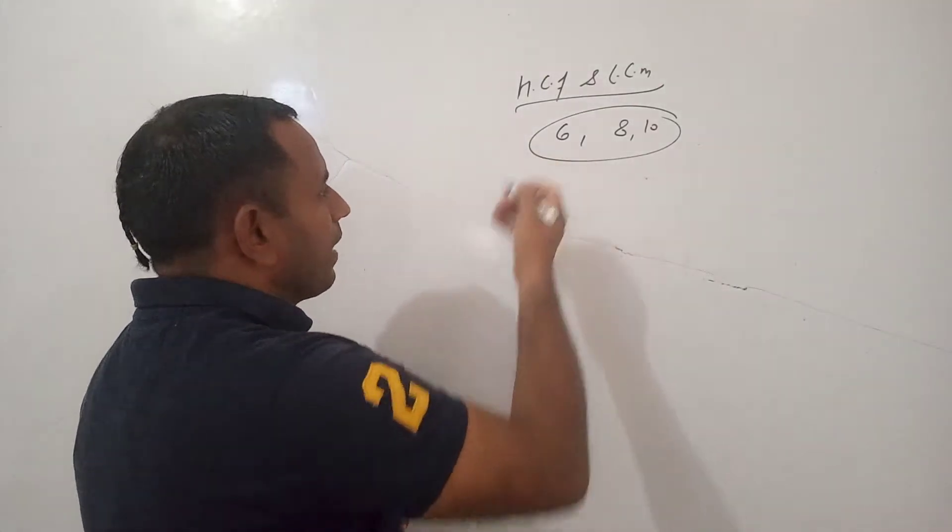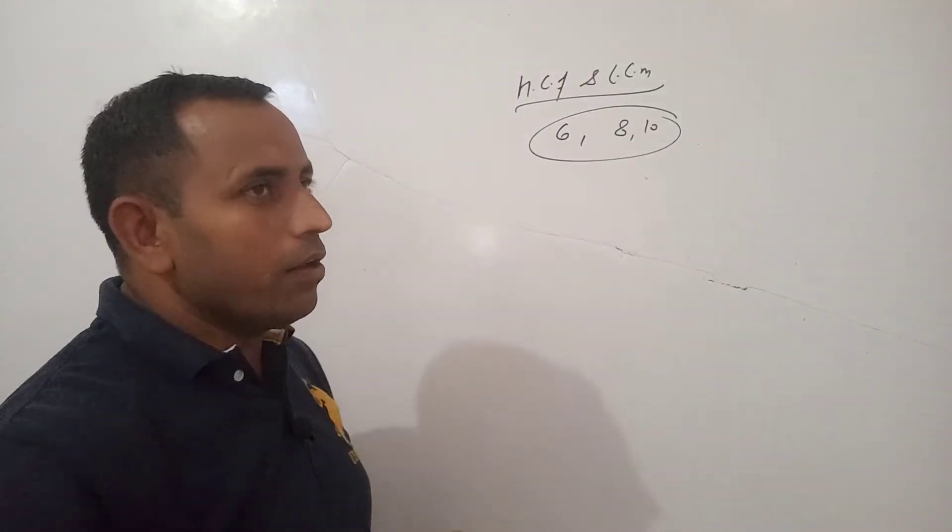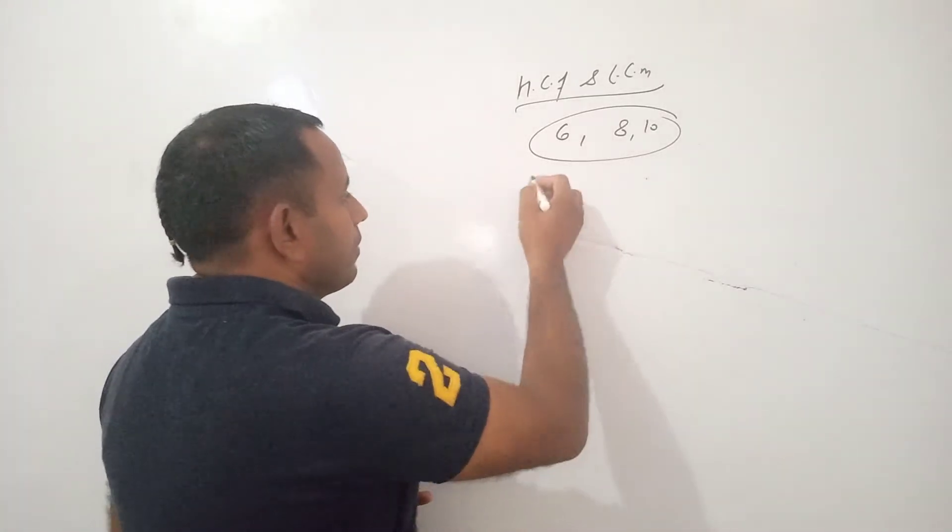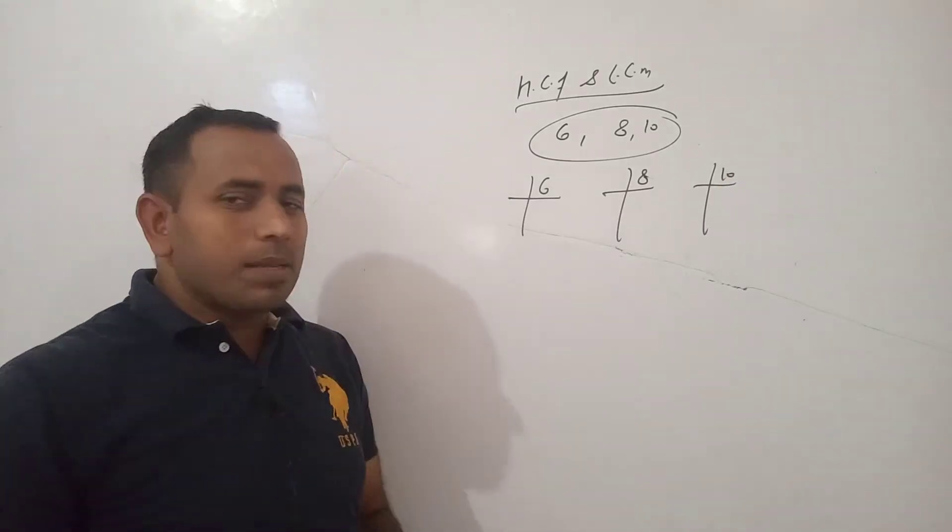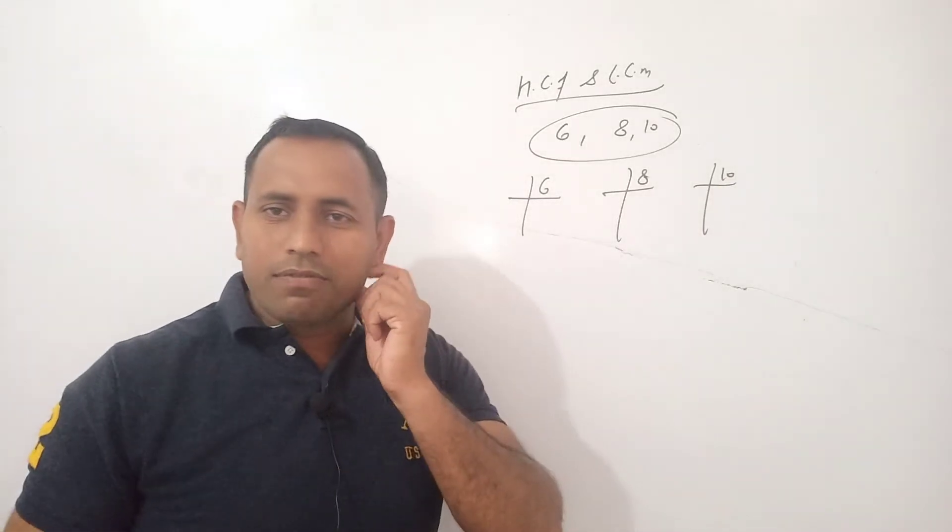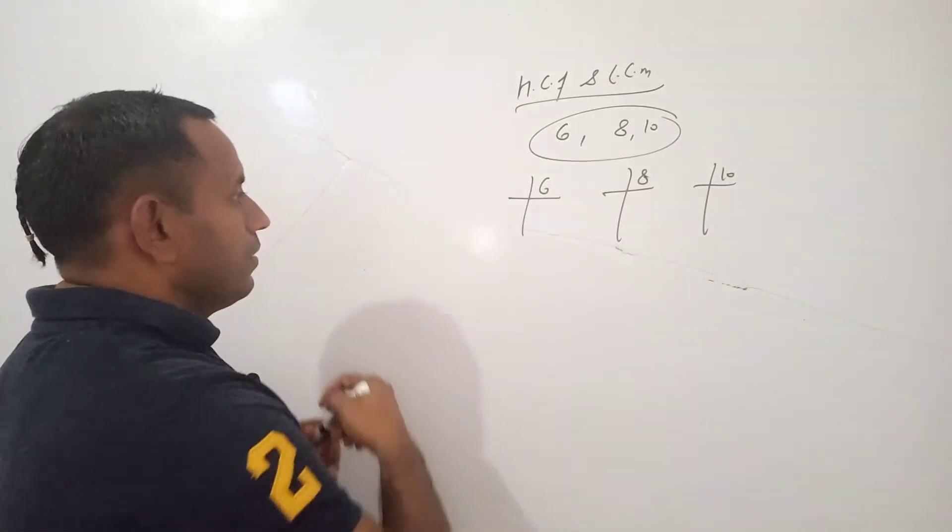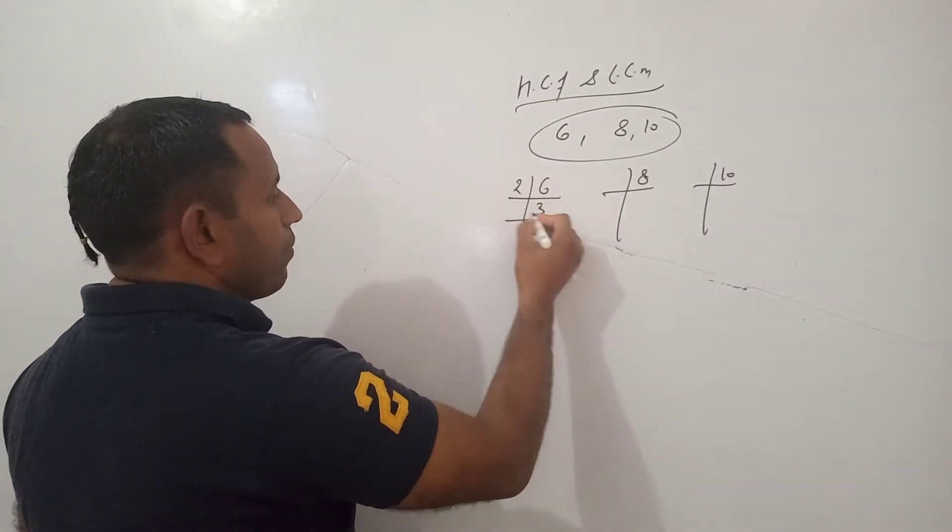So we can do it separately or jointly. 6, 8, 2. The simplest method to find out HCF is factorization method. So find out the factor of each number.